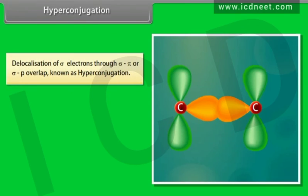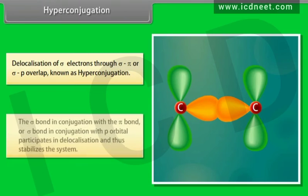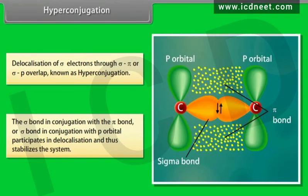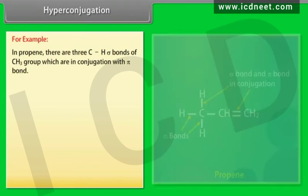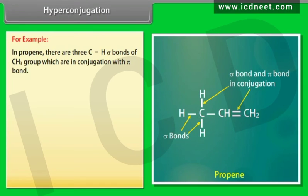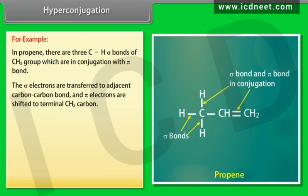Hyperconjugation: delocalization of sigma-electrons through sigma-pi or sigma-p overlap is known as hyperconjugation. The sigma-bond in conjugation with the pi-bond, or sigma-bond in conjugation with a p-orbital, participates in delocalization and stabilizes the system. In propene, there are three C-H sigma bonds of the CH3 group which are in conjugation with the pi-bond, and the sigma-electrons are transferred to the adjacent carbon-carbon bond while pi-electrons are shifted to the terminal CH2 carbon.